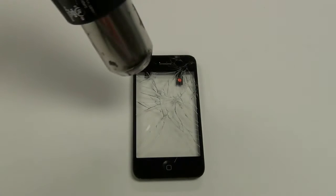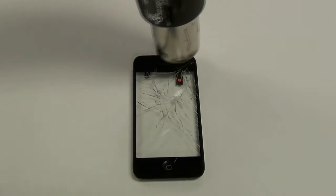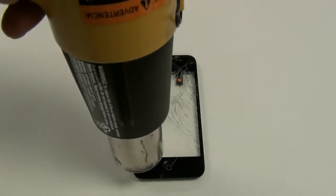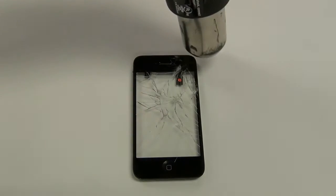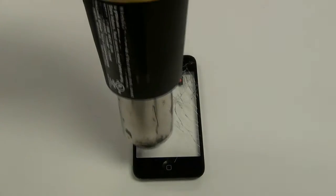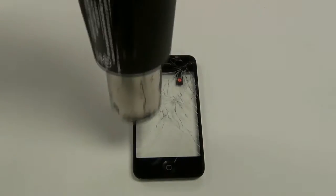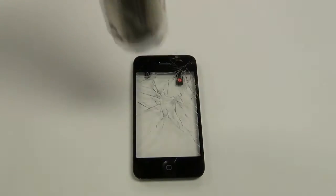To separate the touchscreen glass digitizer from the mid-frame, heat up the sides to loosen the adhesive holding the glass to the frame. If you've already bought the mid-frame assembly with the home button and touchscreen pre-assembled, ignore this step.